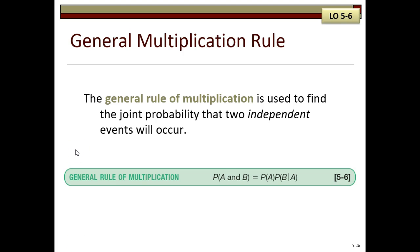The general rule of multiplication is used to find the joint probability that two independent events will occur. It states that for two independent events A and B, the joint probability that both events will happen is found by multiplying the probability that event A will happen by the conditional probability of event B occurring, given that A has occurred. So figure 5-6 gives us the formula for the joint probability of A and B using the general rule of multiplication.